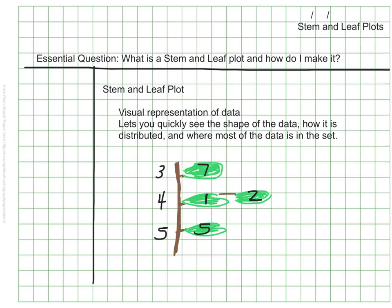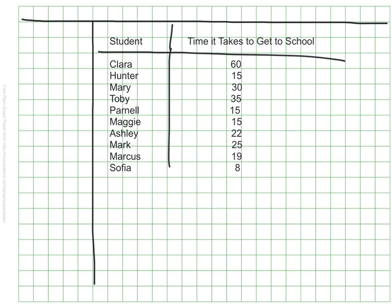The question is: how do we come up with this shape and what do the numbers mean? I have a list here of student names and the time it might take these students to get to school on a typical day. I could make a line plot or a bar graph of this information, but I want to make a stem and leaf plot, so let's see what that would look like.